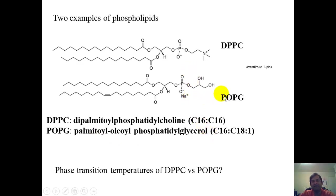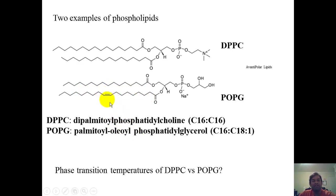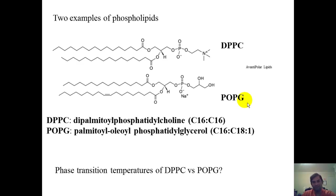About 10% of lung surfactant is POPG — a monounsaturated phospholipid. This constitutes a very important part of the lung. Along with many other components and proteins, these comprise lung surfactant. Premature infants do not have lung surfactant, so they undergo respiratory distress because the genes for making lung surfactant proteins are expressed later in gestation.